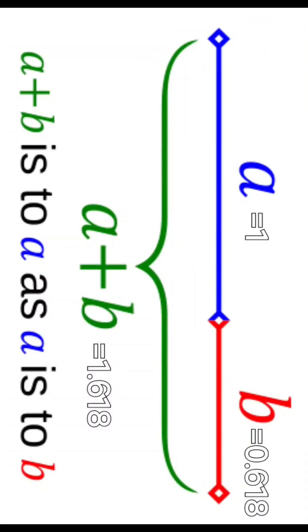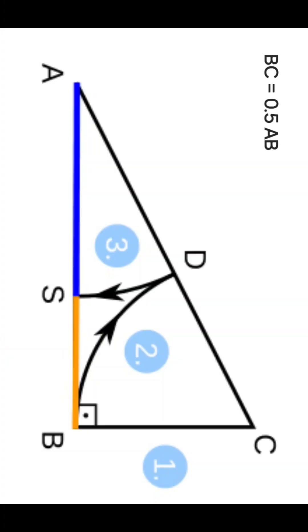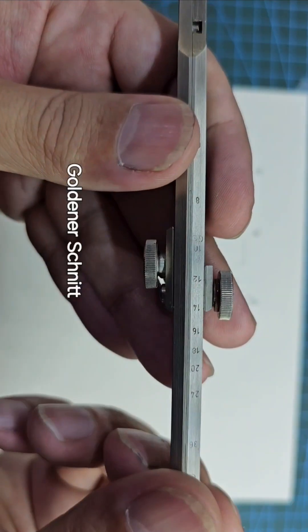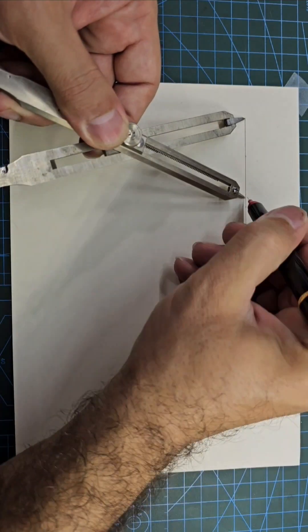The golden ratio is dividing a line into the proportion of 1 to 0.618. To do that, there's a rather complicated geometrical method, but by using the small divider and putting the vernier setting into GS, we can simply find the golden ratio of any given line.